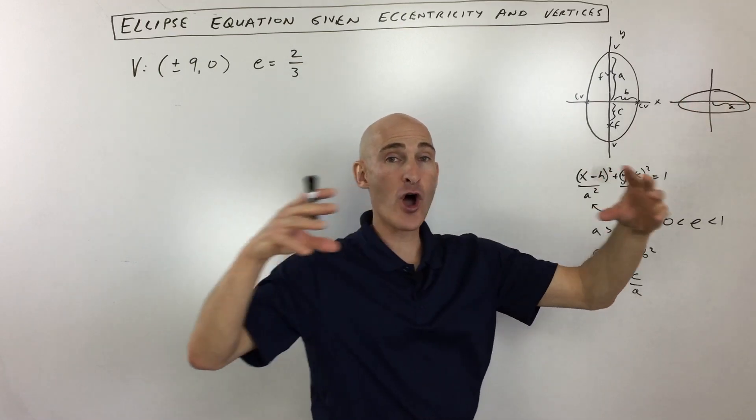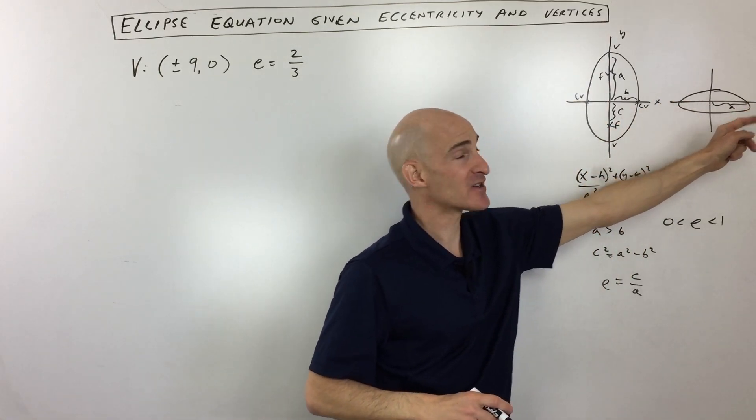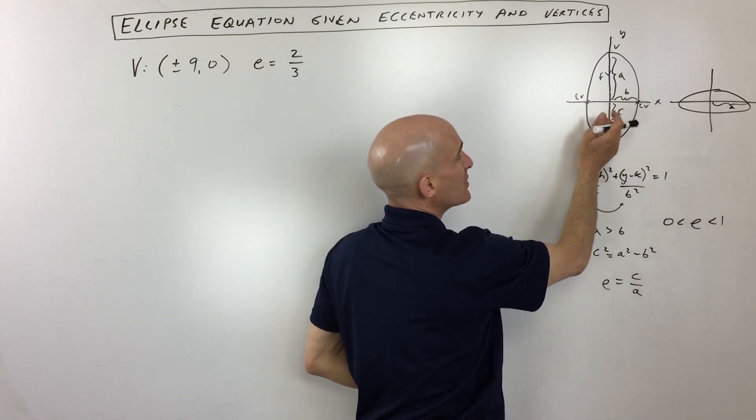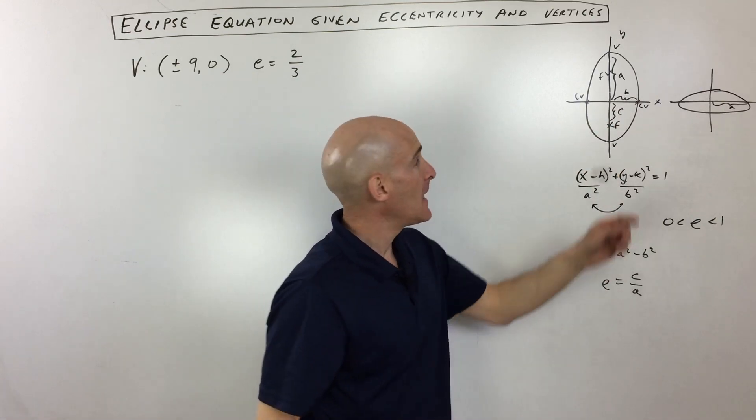But the distance from the center to the vertex—the vertices are going to be on that longer axis, that's called the major axis. So in this case, this is the major axis, and the minor axis is going to be the narrower direction. The distance from the center to the co-vertex or the minor vertex, we call that distance b.